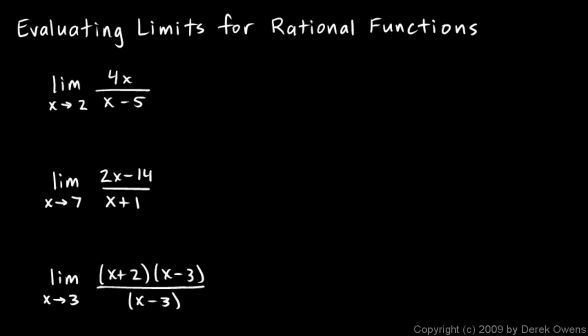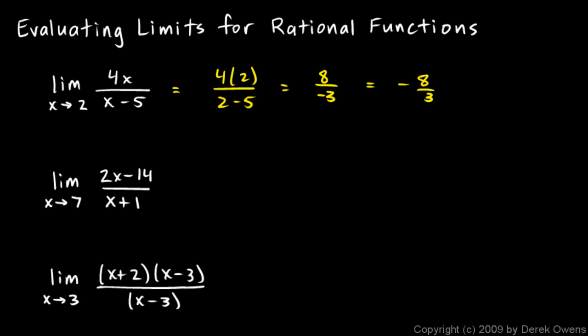Now we'll talk about evaluating limits for rational functions and we'll start with three simple examples. Look at this first one: the limit as x approaches 2 of 4x over x minus 5. If you can simply take the x value of 2 and plug it in, that gives us 4 times 2 over 2 minus 5, which is 8 over negative 3, or negative 8 thirds. If you can just plug in the value and get a finite answer, you're done.